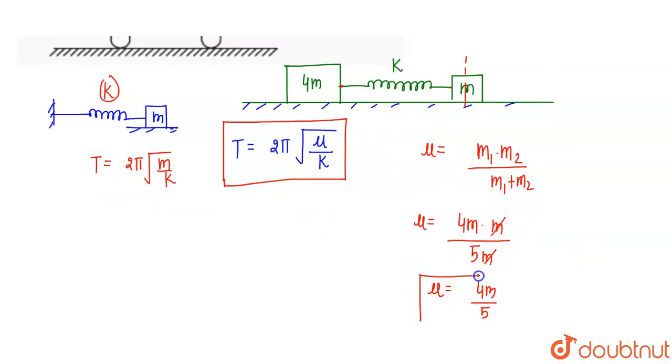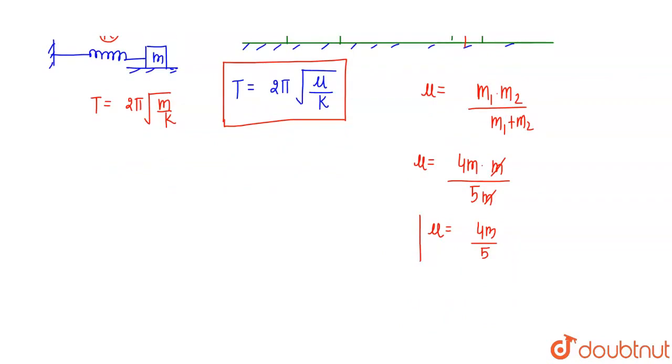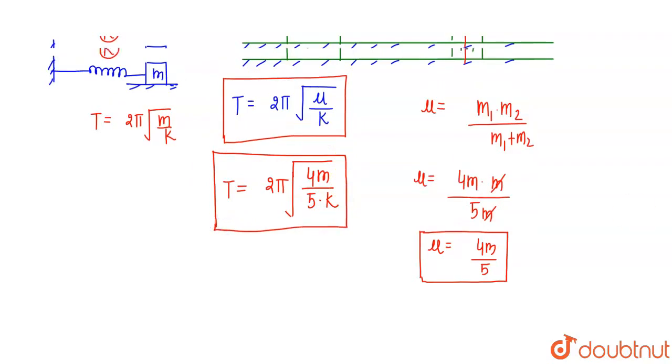Now putting this value of μ in the time period formula, we get T equals 2π under root μ by K, which is 2π under root 4M by 5 divided by K. This is the time period of oscillation of the system.